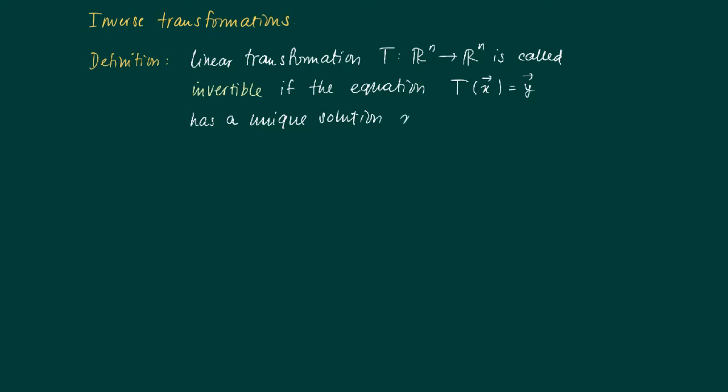So basically it says just the same as one-to-one functions, real functions, that when we start off with a vector X and we map it onto a vector Y, we can find it back implicitly.